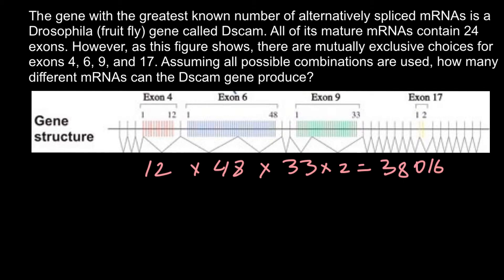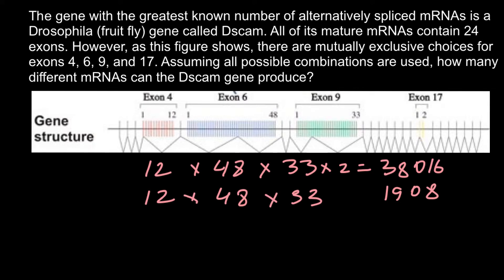That also means 38,016 variants of the proteins — this is a surface protein found on the surface of cells. But in some literature, you may find that the number of variants is 19,008, which is exactly half of 38,016. Why? Because some scientists calculate only the first three domains — so 12, 48, and 33 variants — and omit the last one where we have two variants. In this video, I'm going to explain these different approaches and why some scientists use one number and others use the other.